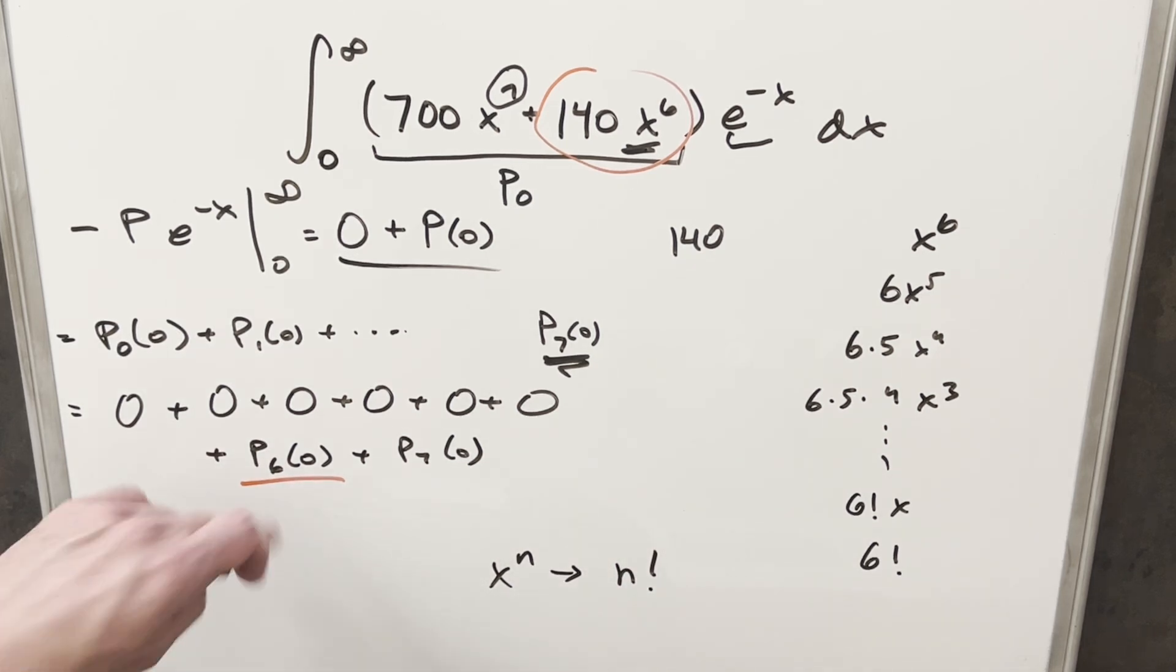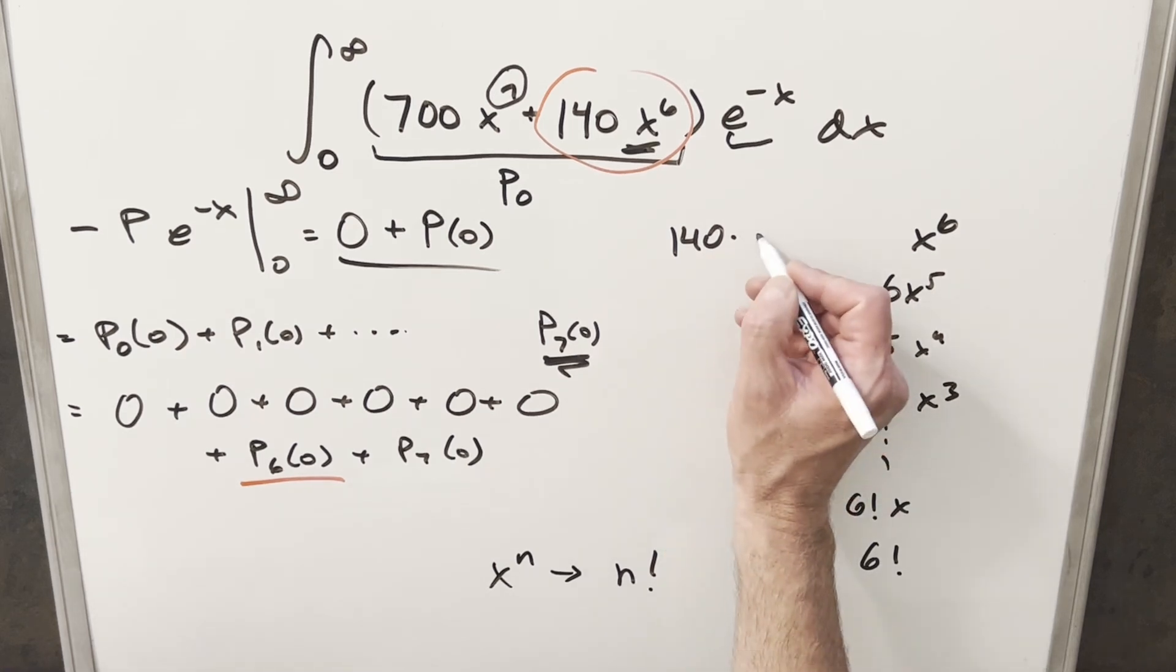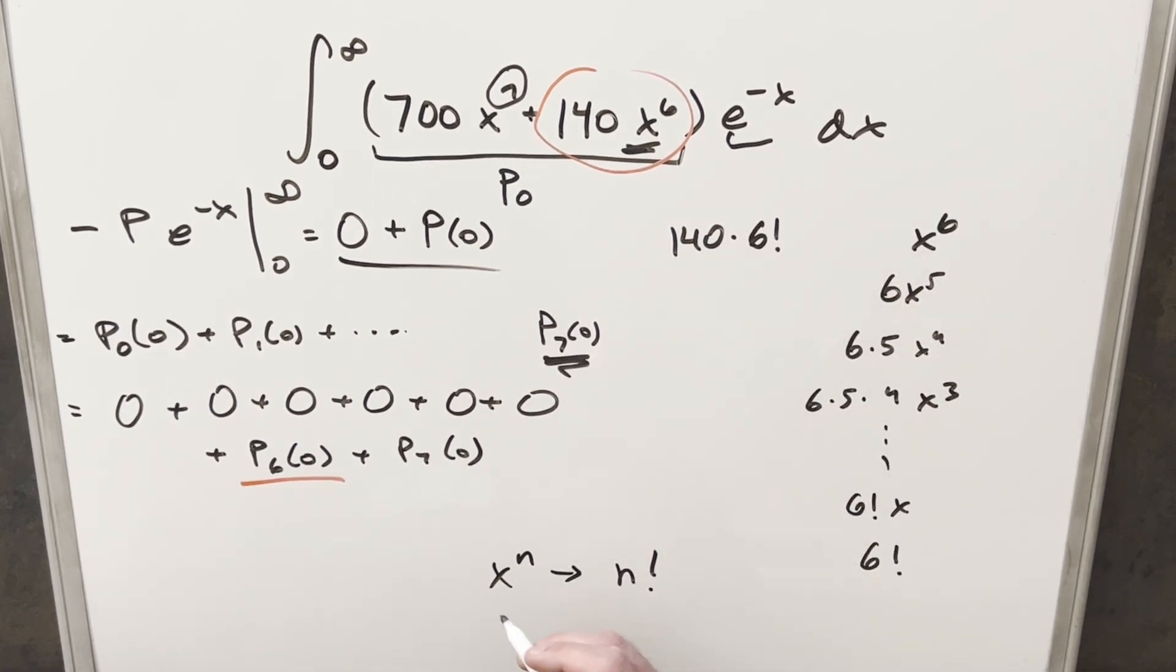So what we've done here for our P₆(0), we've just differentiated this down to 6 factorial. And so for this, we have that value, and we can write this in as 140 times 6 factorial. But then for P₇(0), we can do the same thing on this, because when we differentiate that 7 times, the same thing is going to happen, and this is going to become 700 times 7 factorial.